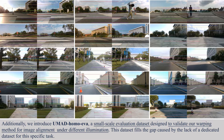Additionally, we introduce UMAD HOMO EVA, a small-scale evaluation dataset designed to validate our warping method for image alignment under different illumination conditions. This dataset fills the gap caused by the lack of a dedicated dataset for this specific task.